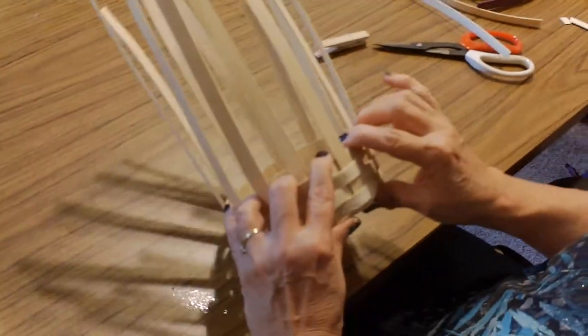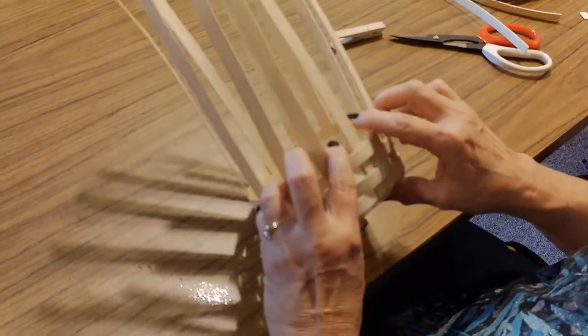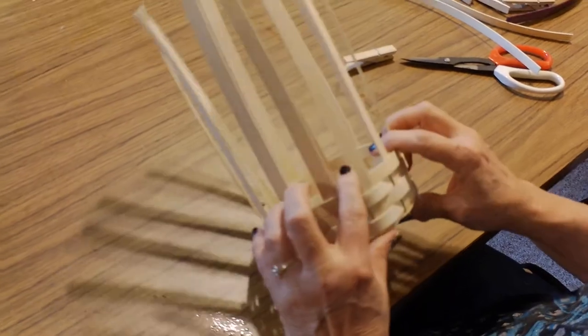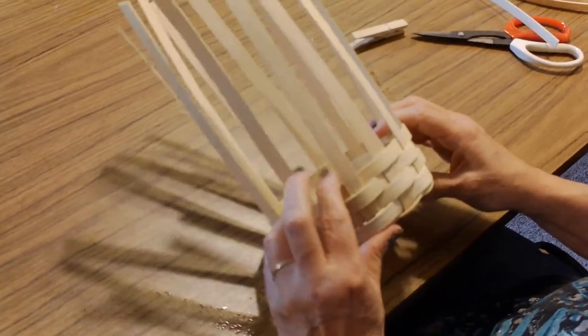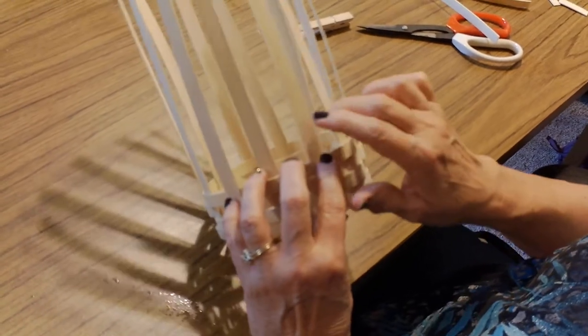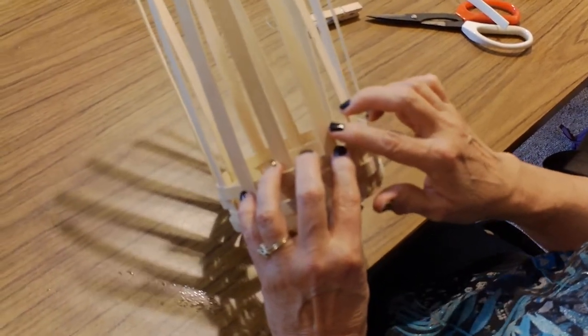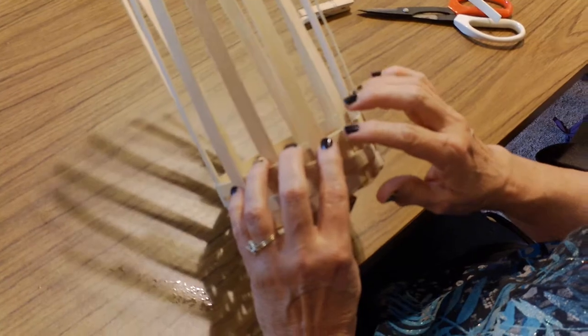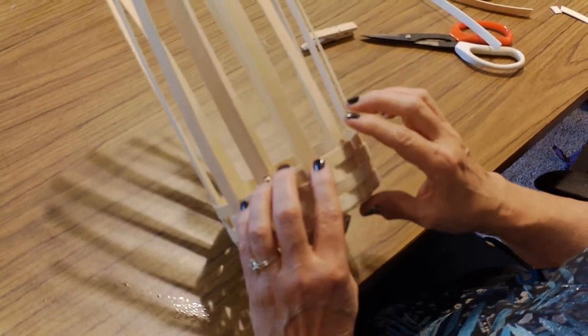This basket has quite a bit of space in between here, and so there are a lot of different techniques that you could use because you have this extra wide space, like cross stitching, randing, and triple twining.